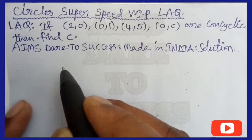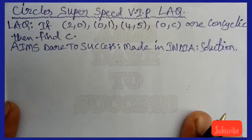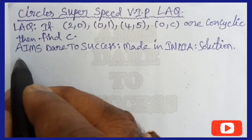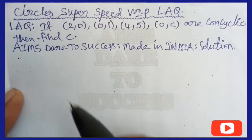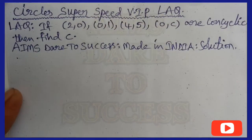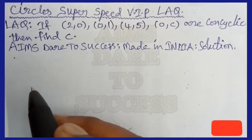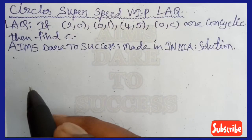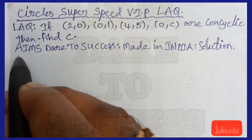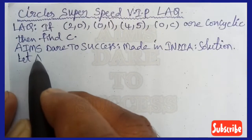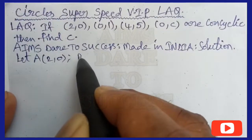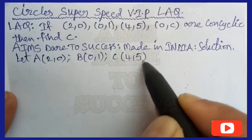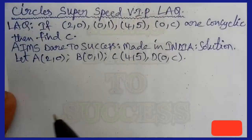Hi, hello, namaste! Welcome to our channel 'Aims Dare to Success'. Today I wanted to discuss with you a circles super speed VIP — very important previous long answer question. The given question is: if (2,0), (0,1), (4,5), (0,c) are concyclic, then find c. Please subscribe, support, share with your friends, like and comment on this video.